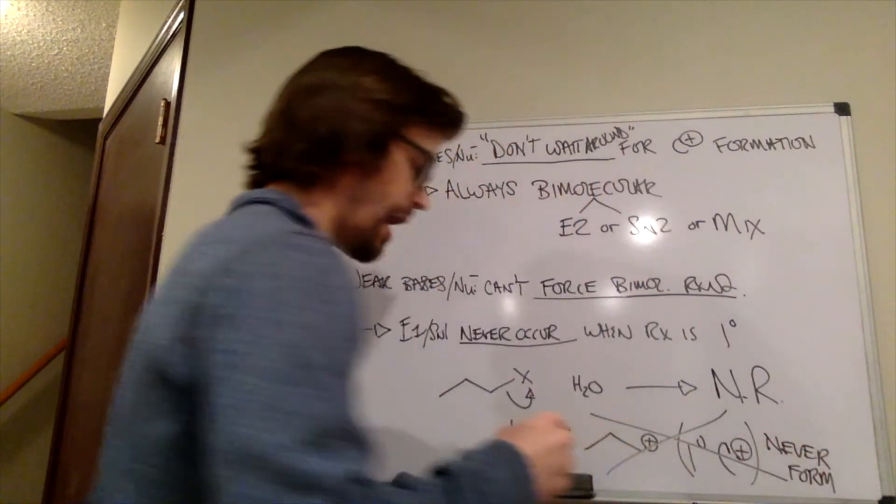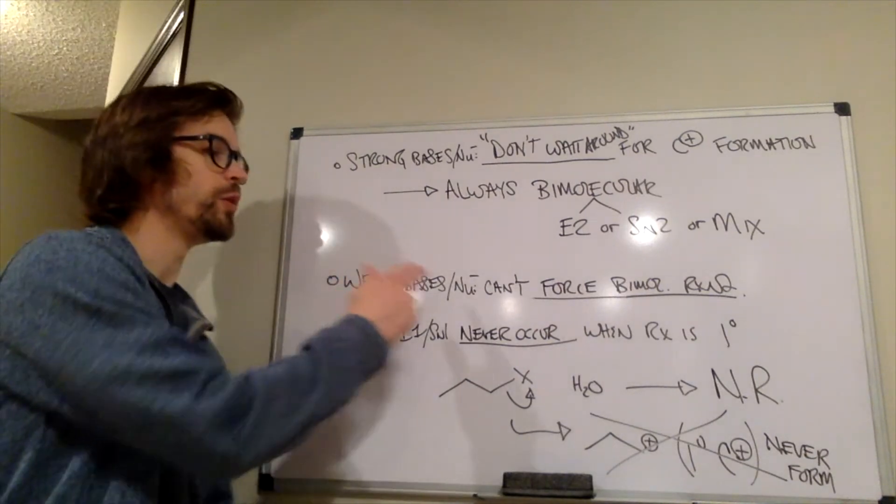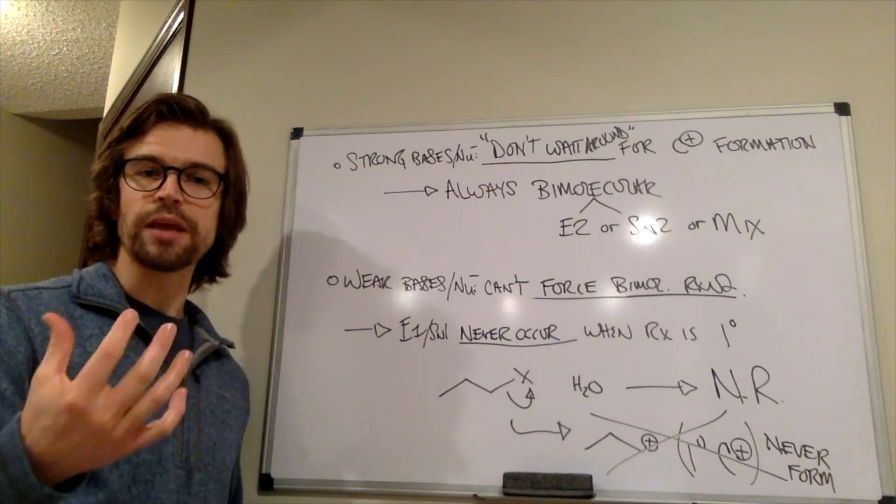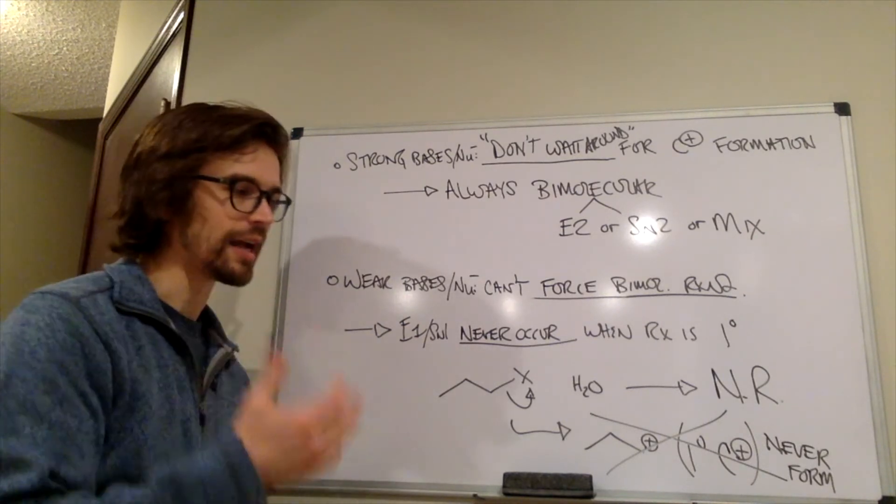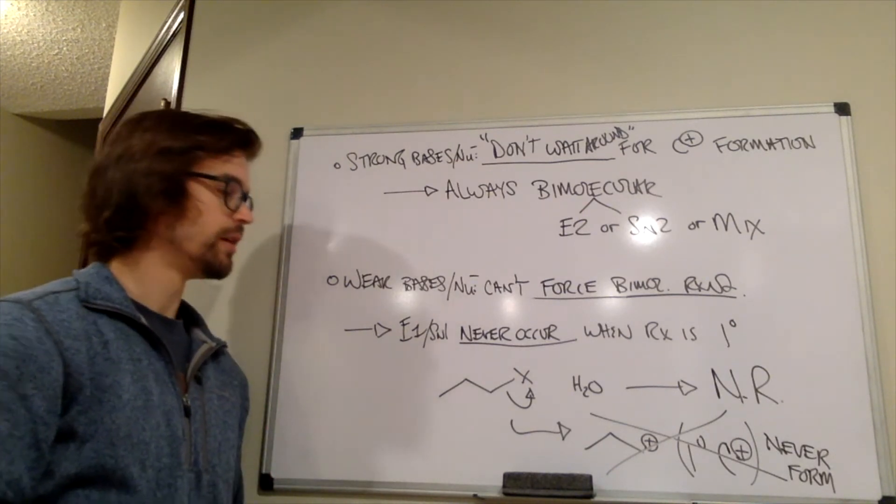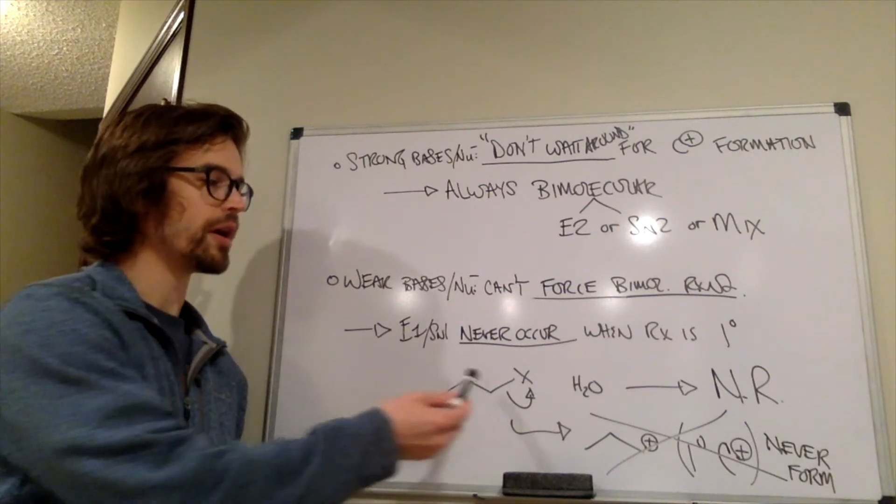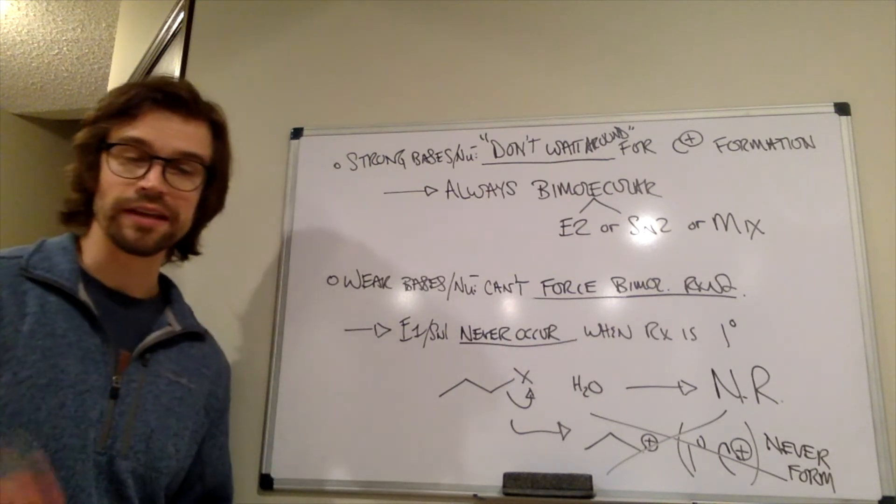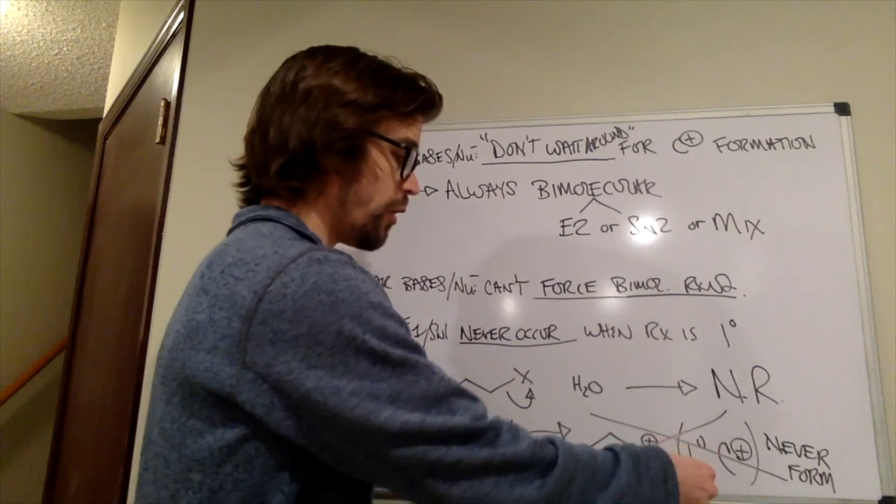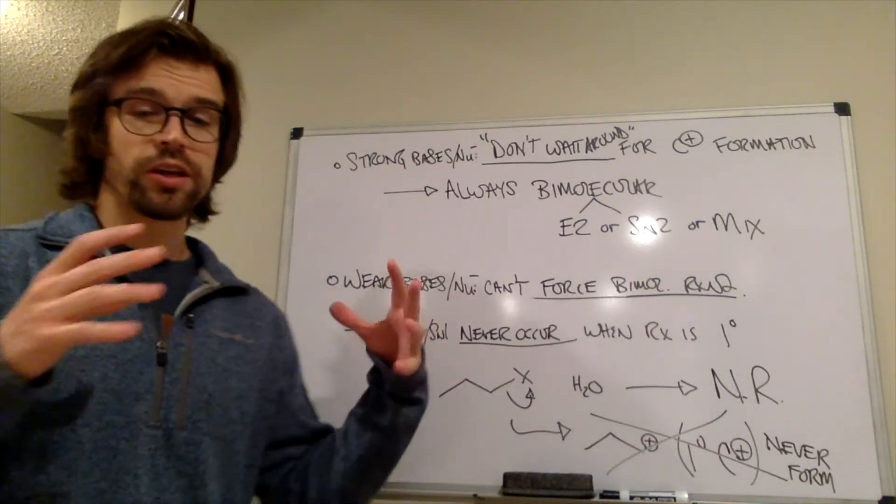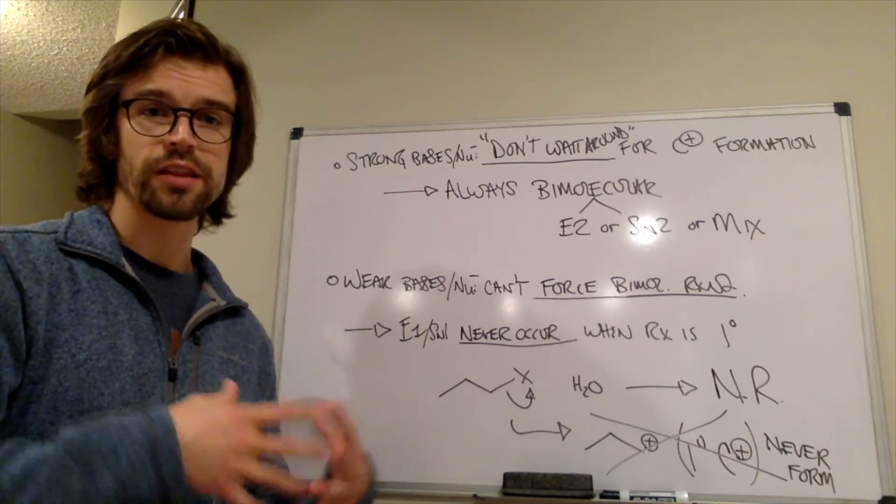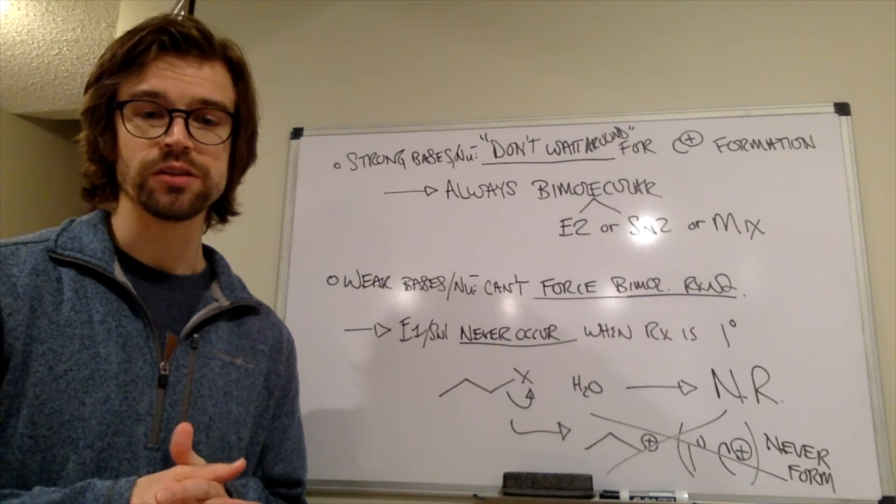So if we have a weak base, a weak nucleophile, and we have a secondary or a tertiary alkyl halide, that can do some chemistry because a secondary or a tertiary carbocation can form. But if it's a primary alkyl halide, it's just going to do nothing. It's just going to sit there and look at you. So it would be no reaction. So alkyl halide substitution and nucleophile strength and base strength are the things that really impact what reaction pathway we're going to do.